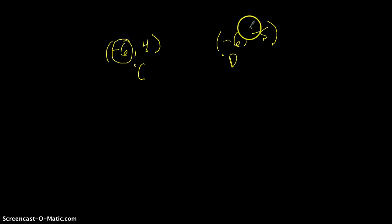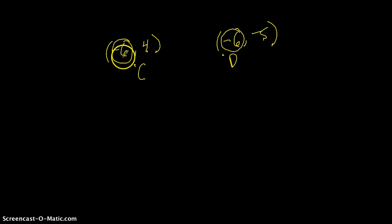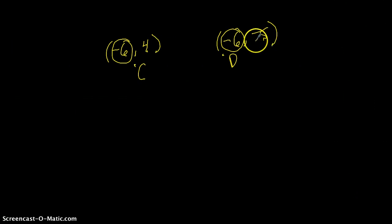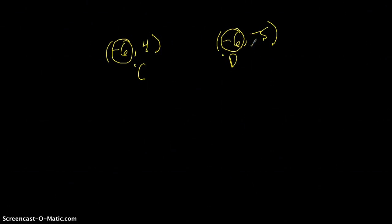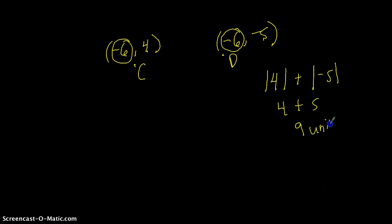This tells me that negative 6 is in common for both points. Since the first number in an ordered pair is the x-coordinate, I know this line segment will pass through negative 6 on the x-axis and will be vertical, starting at positive 4 and ending at negative 5. We're passing from the second quadrant into the third quadrant, so we add absolute values: |4| + |−5| = 4 + 5 = 9 units.